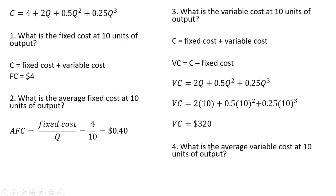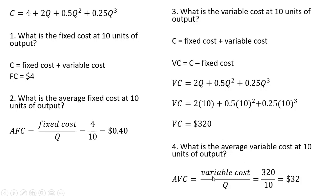What is the firm's average variable cost at 10 units of output? We take the variable cost and divide it by Q — in this case 10 — and we get $32. So there's $32 of variable cost in each unit of output.